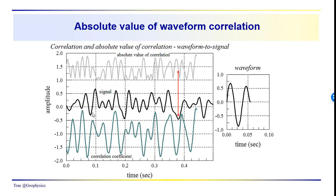Taking the absolute value of the waveform correlation gives us this series. What I'd be looking for is similarity between the absolute value of the correlation and features in the original signal. Looking at the comparison — from peak to trough, small peak to small peak, large peak to large peak — we don't really see correlations in terms of amplitude and phase between the absolute value of the correlation and features in the signal waveform.